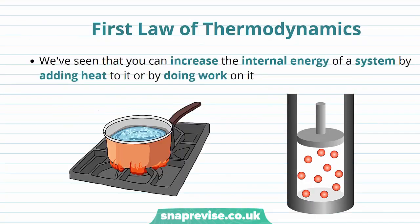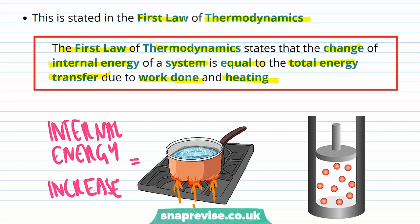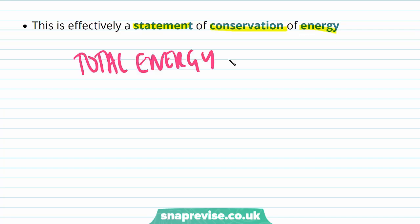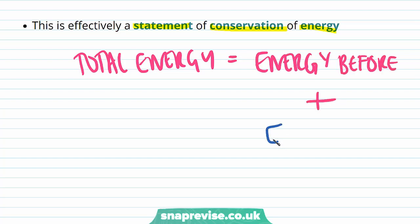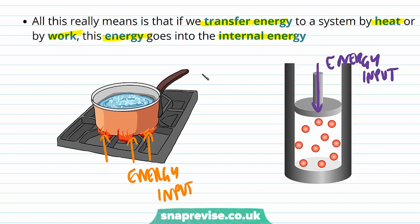We're going to use what we've learned about increasing internal energy to define the first law of thermodynamics. We've seen that you can increase the internal energy of a system by adding heat to it or by doing work on it. The first law of thermodynamics states that the change of internal energy of a system is equal to the total energy transfer due to work done and heating. So the internal energy increase equals the energy transfer due to heat plus the energy transfer due to work done. This is effectively a statement of conservation of energy — the total energy equals the energy we had before plus the energy input. If we transfer energy to a system by heat or by work, this energy goes into the internal energy and is stored there.